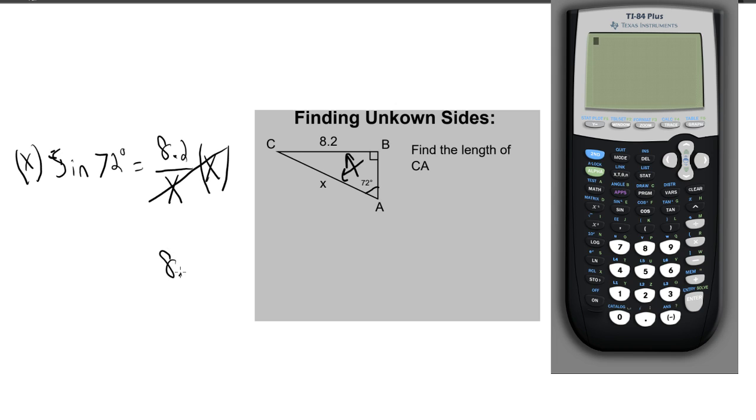You have 8.2 equals X times sine of 72 degrees. And if we're trying to get X by itself and we have X times the sine of 72 degrees, well what's the opposite of multiplication? Division.